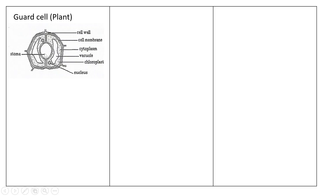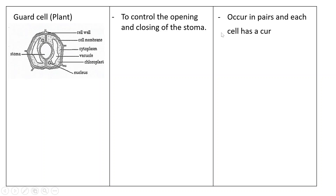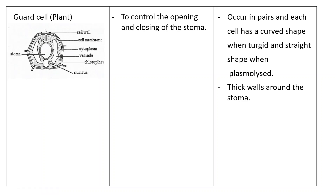The guard cell in plants — which has a stoma, nucleus, vacuole, chloroplasm, cytoplasm, cell membrane, and cell wall — functions to control the opening and closing of the stoma. Specialization features: guard cells occur in pairs and each cell has a curved shape when turgid and a straight shape when plasmolyzed; when plasmolyzed they straighten and close the stoma. They also have thick walls around the stoma to provide mechanical support.